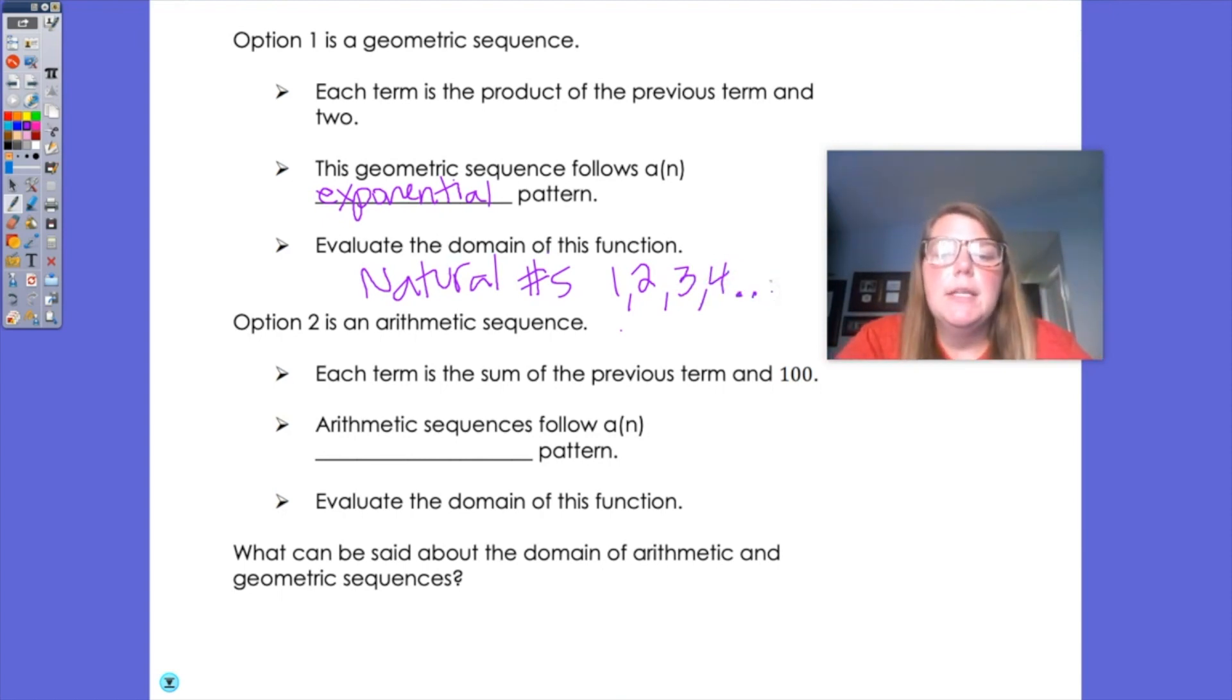I didn't include zero here because if I took no courses, I wouldn't make any money. And as we said, option two is arithmetic. It is because it is a previous term in 100, a sum, and it follows a linear pattern. And obviously we're still talking about college courses. The domain would still be natural numbers because you can only take those whole numbered courses.